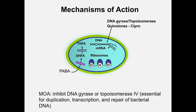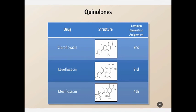I also want to talk about the quinolones and fluoroquinolones. These are drugs that inhibit DNA gyrase or another enzyme called topoisomerase. These enzymes are essential for the duplication, transcription, and repair of bacterial DNA. So the mechanism of these drugs is to interfere with DNA replication — they are DNA replication inhibitors.